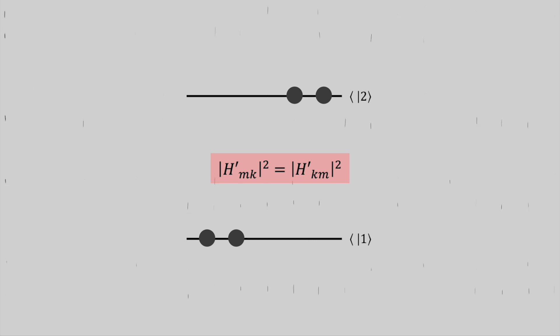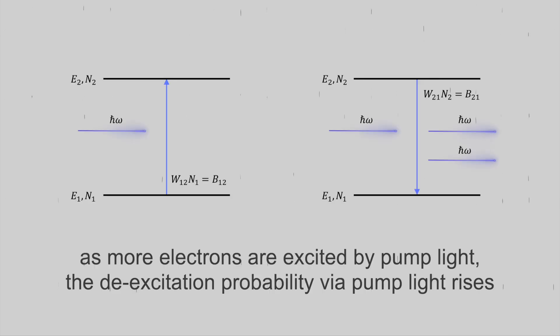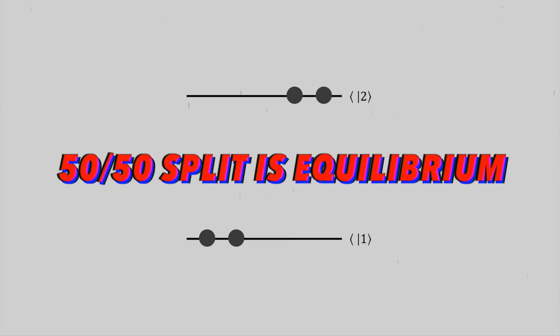Because the more electrons are excited, the less remain of the ground state that can actually be excited. And so when this happens, the probability that we actually de-excite the higher energy electrons with our pump light by means of stimulated emission rises tremendously. The best outcome we can achieve is basically a 50-50 split in a two-level system. This is the equilibrium value.